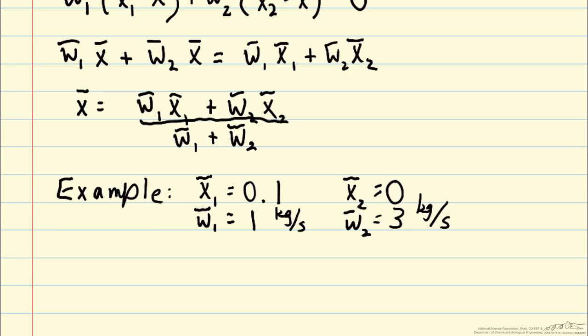So first we can just calculate w bar is equal to w1 bar plus w2 bar equals 4 kilograms per second. So outlet just equals sum of inlet.